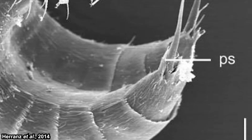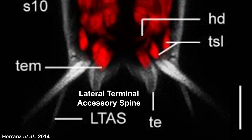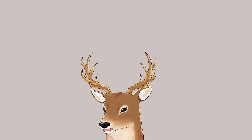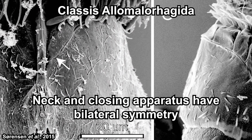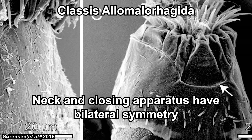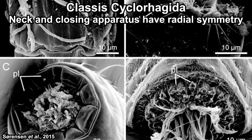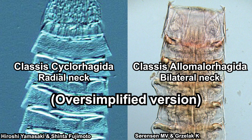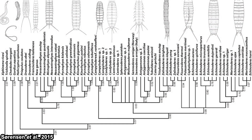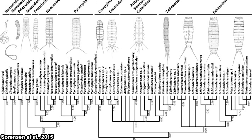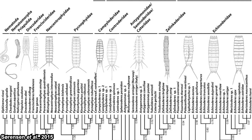Some species are sexually dimorphic, in which males have several penile spines, while females only have lateral terminal accessory spines. As for the difference between the two classes, this is supported by molecular evidence, so the validity of this phylogeny is quite robust.